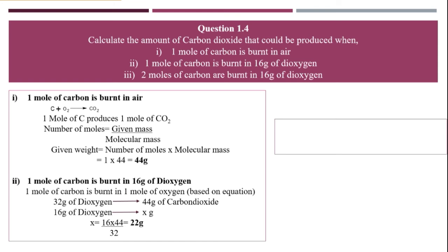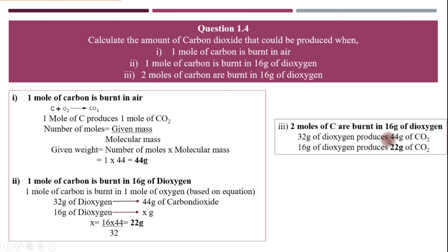Now the third one is two moles of carbon are burnt in 16 grams of dioxygen. Here when you compare the equation, 16 grams of dioxygen means only that much dioxygen is available for us in the equation. So here oxygen will be a limiting reagent, so we are going to calculate the question based on dioxygen. Here 32 grams of dioxygen produces 44 grams of carbon dioxide.